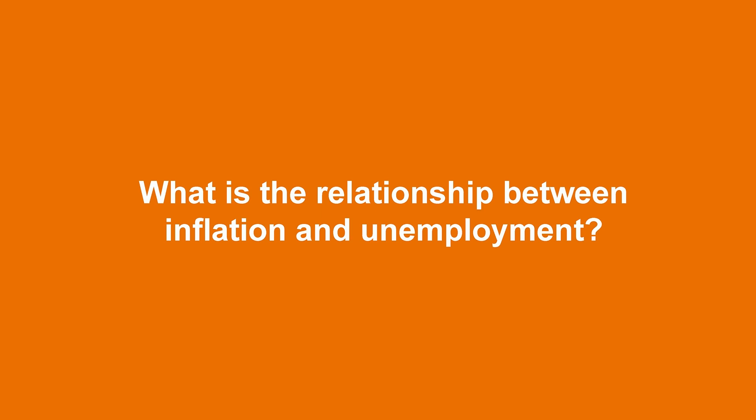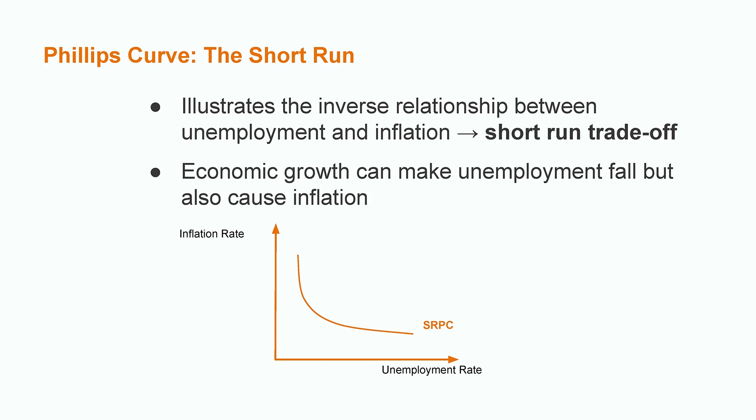What is the relationship between inflation and unemployment? The Phillips Curve illustrates the inverse relationship between unemployment and inflation. This is a short-run trade-off since a decline in unemployment can have immediate effects on prices. Economic growth is associated with many positive things, such as increases in consumption, investment, employment, and wages. This can generate inflation since the costs for firms will be higher.